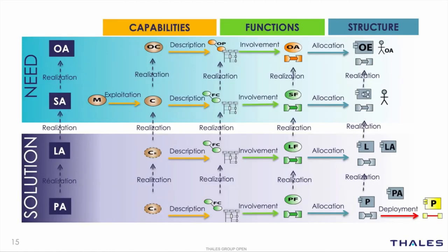To summarise, Arcadia exploits the same concepts in all perspectives. Capabilities are described by functional chains and scenarios involving functions allocated to structural elements. The engineering objectives of each Arcadia perspective are just different. Not all projects are required to use all of these perspectives. A precise analysis of the engineering objectives and the definition of the corresponding modelling strategy is a mandatory step at the beginning of each project. This is what coaching is about.